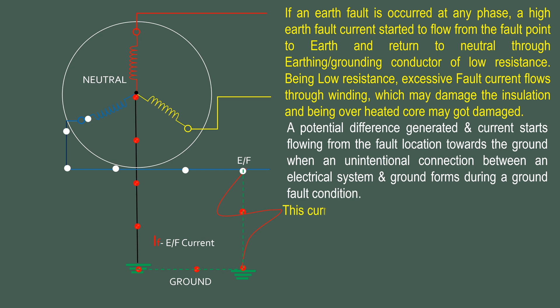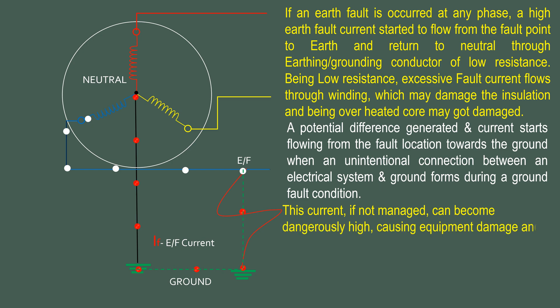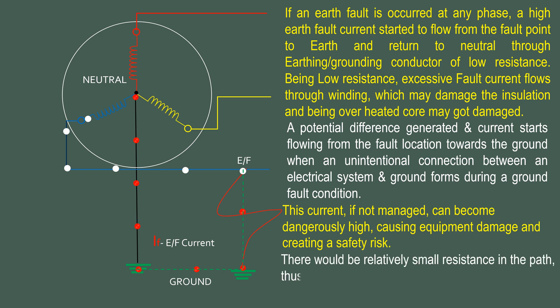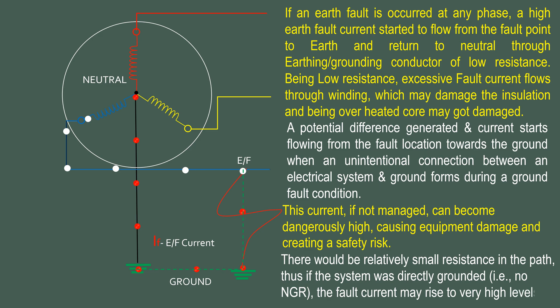This current, if not managed, can become dangerously high, causing equipment damage and creating a safety risk. There would be relatively small resistance in the path. Thus, if the system is directly grounded — that is, with no NGR — the fault current may rise to very high levels.